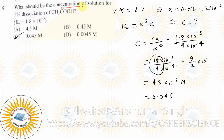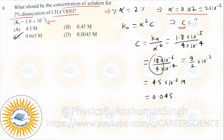What would be the concentration of solution for 2% dissociation of acid? Data: 2% dissociation, so alpha = 0.02. You are asked for concentration C. The Ka value is given, so apply Ostwald's dilution law and solve.